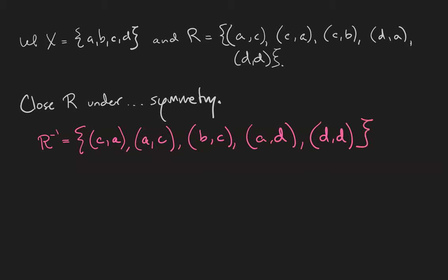The symmetric closure is the relation R union its own inverse, which consists of the pairs (A,C), (C,A), (B,C), (C,B), (D,A), (A,D), and (D,D). That's really handy.